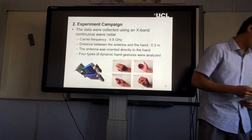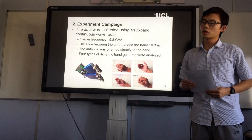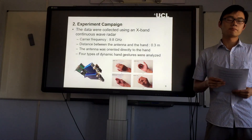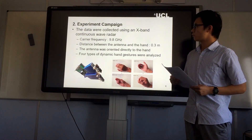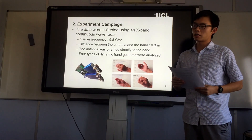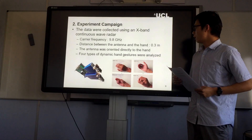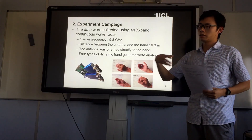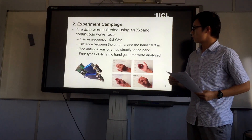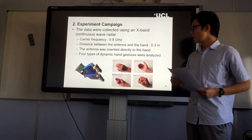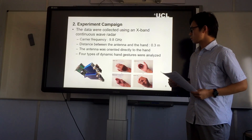I will introduce the experiment campaign. The real data was collected in Beijing. The radar is a continuous wave radar. The carrier frequency is 9.8 GHz, and the distance between the antenna and the hand is about 0.3 meters, like the distance between a human and a laptop. The antenna was oriented directly to the hand. In this work, four types of dynamic hand gestures were analyzed.